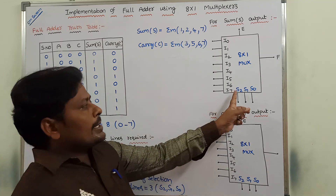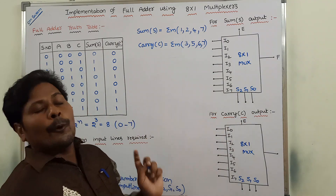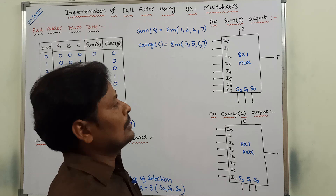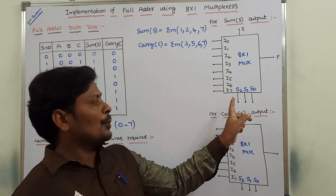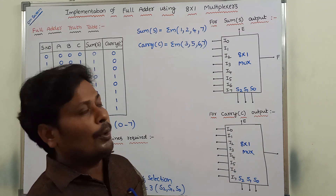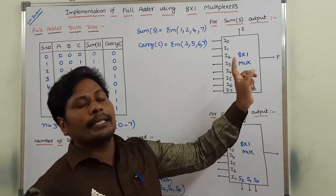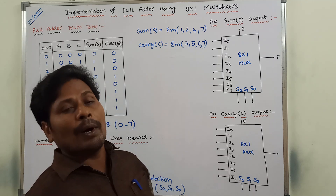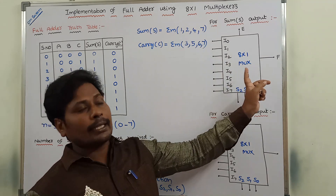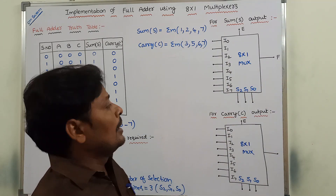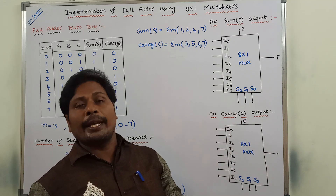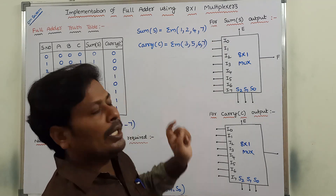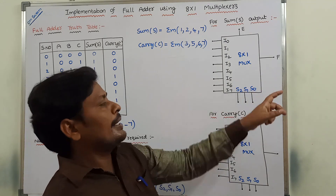By using these 3 selection lines, we select only 1 input line, and whatever input is selected is sent as the output. When S2, S1, S0 values are 0,0,0, the equivalent decimal value is 0, so I0 input is selected and sent as the output. When S2, S1, S0 values are 0,0,1, the equivalent decimal value is 1, so I1 is selected. Based on the binary combination of S2, S1, S0, the equivalent decimal value is calculated, and the corresponding input is selected as the output.